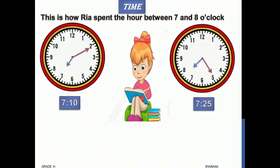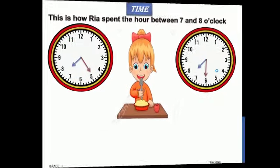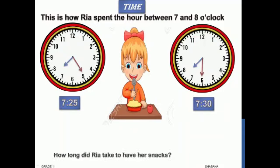From 7:10 till 7:25, she is reading books. We have to find how long she read. To find that, we check the minutes: first it was at 10 minutes and it reached 25 minutes, so the interval is 5, 10, 15. She is reading books for 15 minutes.